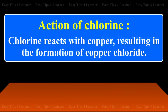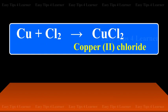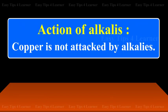Action of chlorine: Chlorine reacts with copper, resulting in the formation of copper chloride. Copper + chlorine gives copper chloride. Action of alkalies: Copper is not attacked by alkalies.